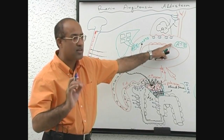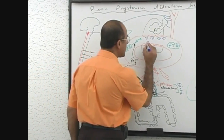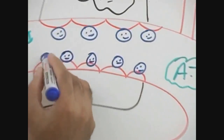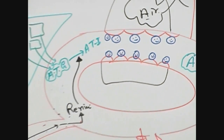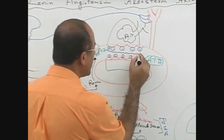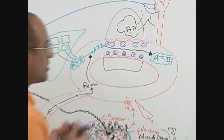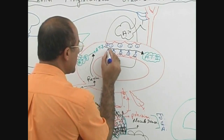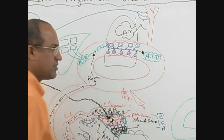For your level, just remember that in the pulmonary capillary endothelial lining, they express an enzyme called Angiotensin Converting Enzyme. These enzymes are responsible for converting angiotensin 1 into angiotensin 2.